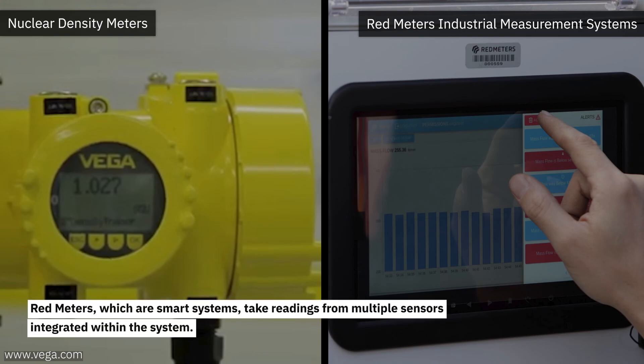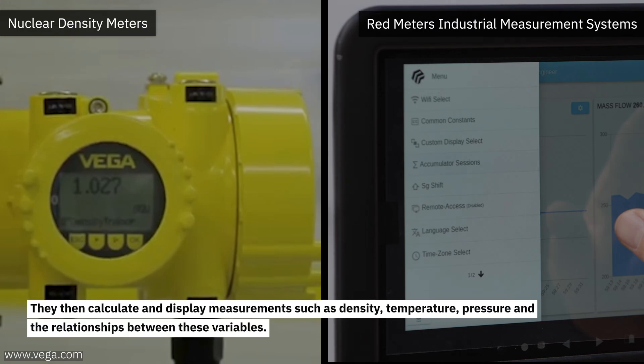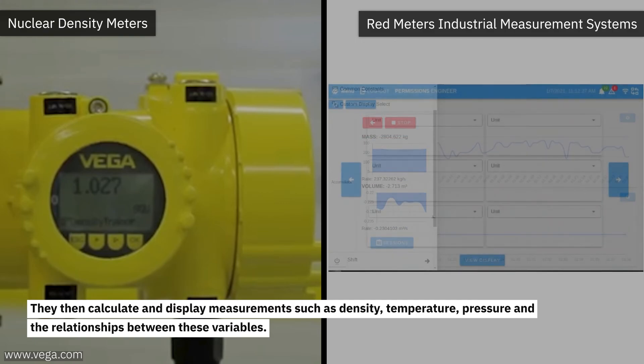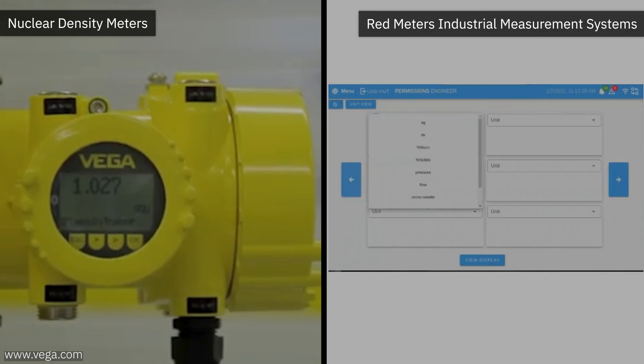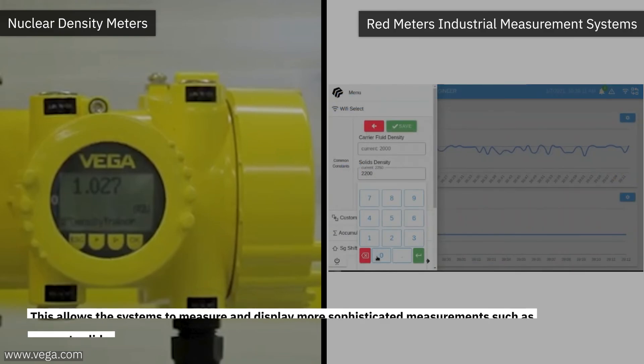Red meters, which are smart systems, take readings from multiple sensors integrated within the system. Then, they calculate and display measurements such as density, temperature, pressure, and the relationships between these variables. This allows the system to measure and display more sophisticated measurements, such as percent solids.